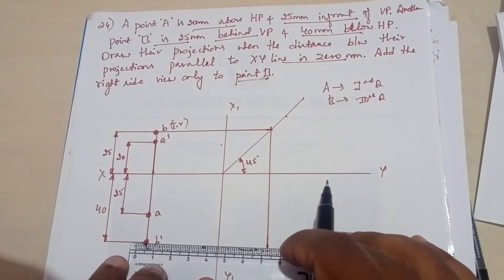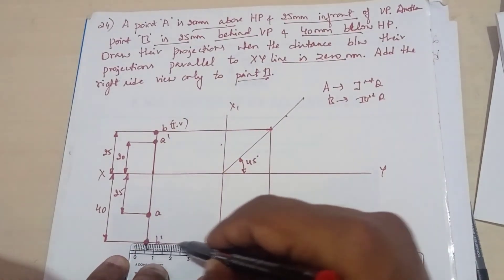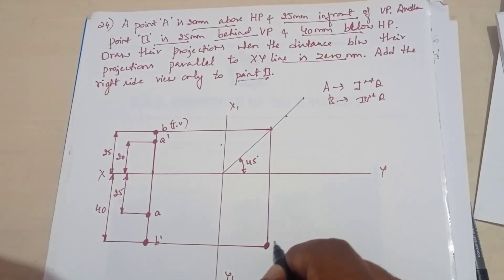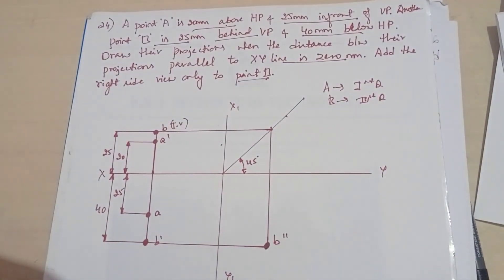Draw the projection line from this end, B double dash. So this completes the problem, okay.